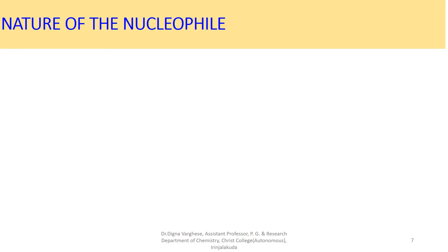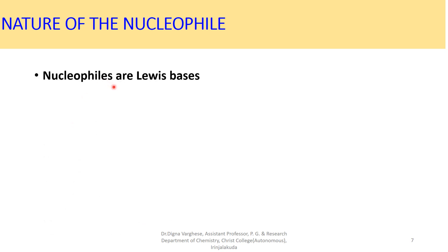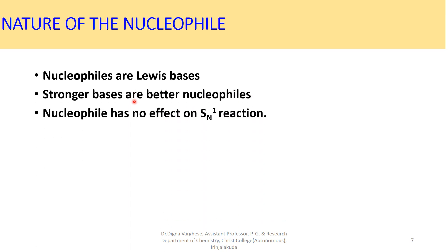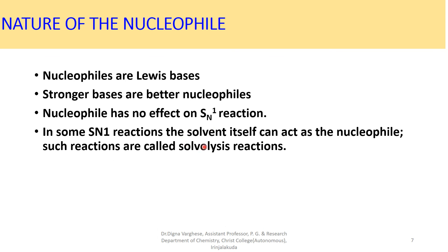The nature of the nucleophile is the second factor affecting SN1 reaction. In SN1 reaction, the rate determining step is the first step — formation of carbocation — and there is no role for the nucleophile in this step. So the nucleophile has no effect on the rate of the SN1 reaction. However, stronger bases are better nucleophiles. In some SN1 reactions, the solvent itself can act as nucleophile; such reactions are called solvolysis reactions.